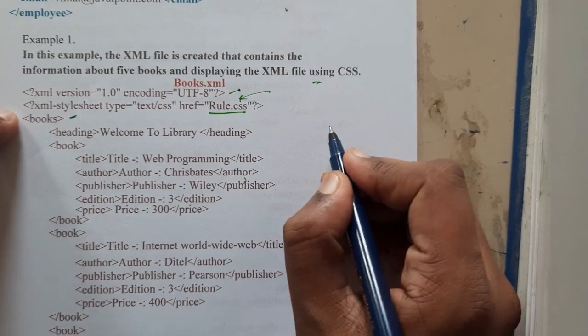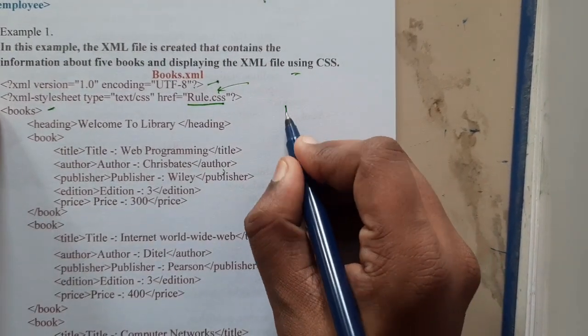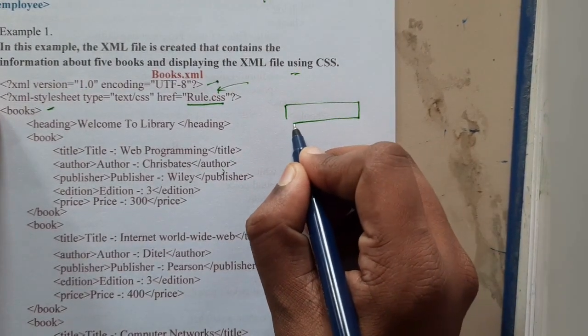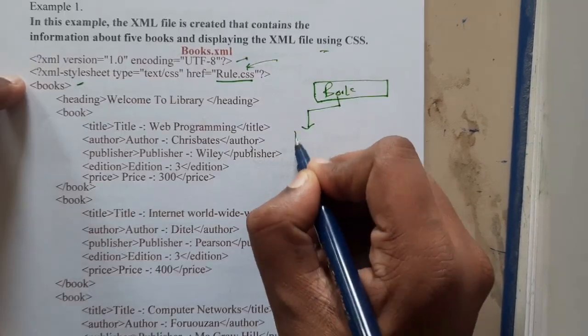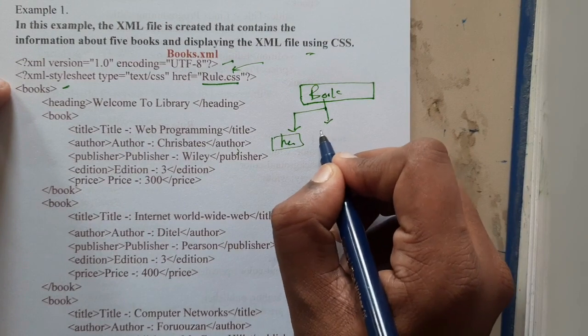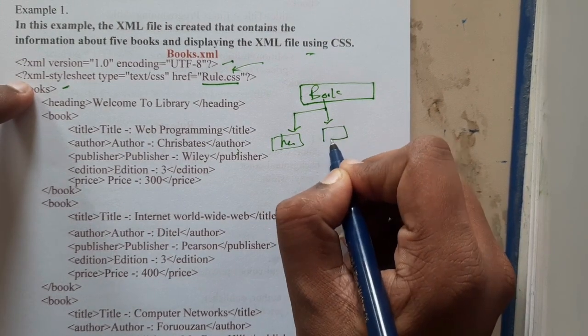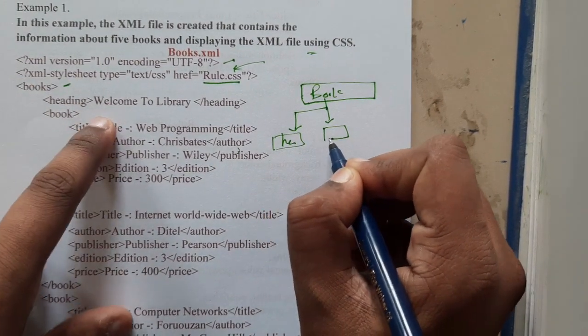Here you started with books. I'll be just drawing the outline, the tree structure so that it will be clear for you. We will be starting with books and each book will be having a particular heading.